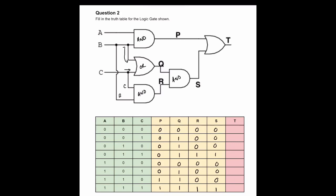Now we get our final output T, which comes from an OR gate taking inputs from P and S. Since it's an OR gate, if there's a one in either column it's going to produce a one. And that's it — we've traced it all the way through the circuit and got our output depending on inputs A, B and C. These questions are a lot easier when you break them down into stages.